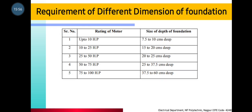These are the ratings of the motors and the size of the depth of the foundation. If the motor is up to 10 HP, then 7.5 to 10 cm deep foundation. 10 to 25 HP, then 15 to 20 cm deep. 20 to 50 HP, then 20 to 25 cm deep. 50 to 75 HP, then 25 to 37.5 cm deep. And 75 to 100 HP motor, then 37.5 to 60 cm deep.